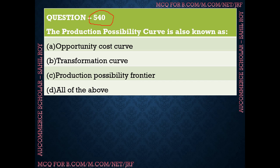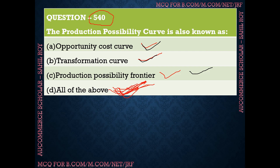Question number 540: The Production Possibility Curve (PPC) is also known as — options are: opportunity cost curve, transformation curve, production possibility frontier, or all of the above. The production possibility curve is known by multiple names — it is also called transformation curve, opportunity cost curve, and production possibility frontier. So the correct answer is option D — all of the above. The PPC is known by four names in total.